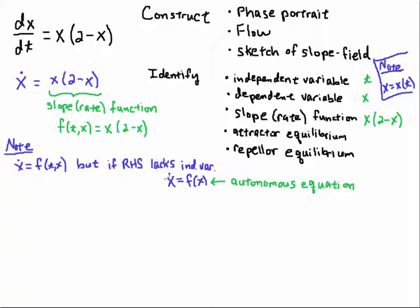Then, we often see the differential equation written as x dot equals f of x, and that's called an autonomous equation. It's autonomous of t.